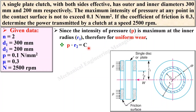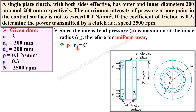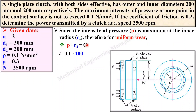So here I am going to assume the uniform wear theory, where intensity of pressure is maximum at r2. You can say p × r2 = constant, according to uniform wear theory. Remember: uniform wear theory means p × r2 = constant, where p is the intensity of pressure and r2 is the inner radius. Putting values: p = 0.1 and r2 = 100, so c = 10 Newton per mm.